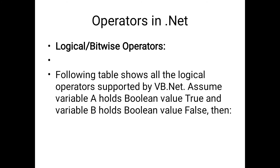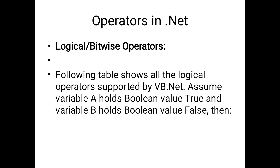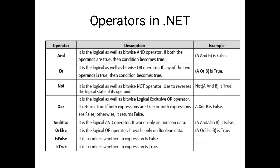The next step is logical or bitwise operators. The following table shows all the logical operators supported by VB.NET. Assume variable A holds boolean value true and variable B holds boolean value false. The logical operators are: And, Or, Not, XOR, AndAlso, OrElse, IsFalse, and IsTrue. For the And operator — it is the logical as well as bitwise And operator. If both operands are true, the condition becomes true. But here A is true and B is false, so the condition becomes false because both operands are not true.